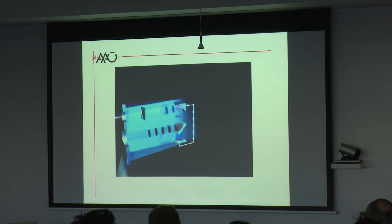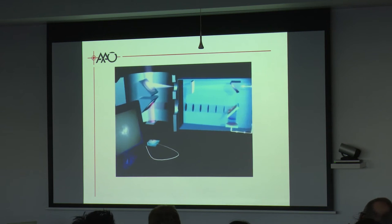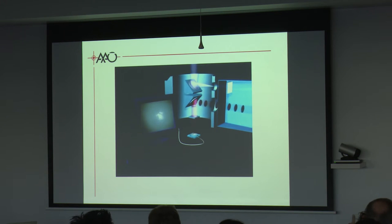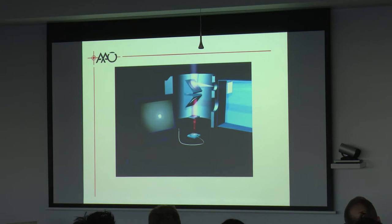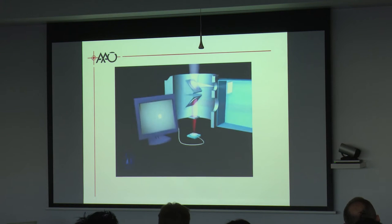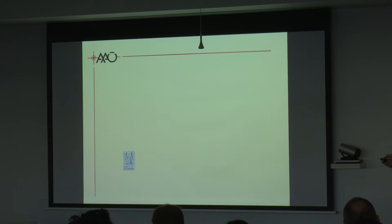For the question about small field of view and the isoplanatic patch — that's right, that's single conjugate AO where you correct just for the column of air above the telescope. But there are also multi-conjugate AO and ground-layer AO — all different AO techniques which I'll show on the next slide.